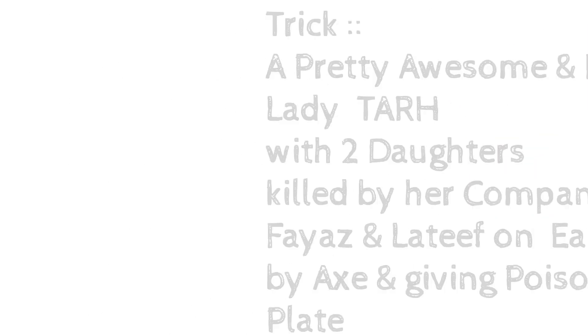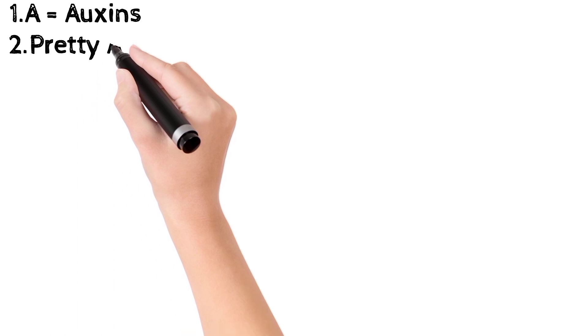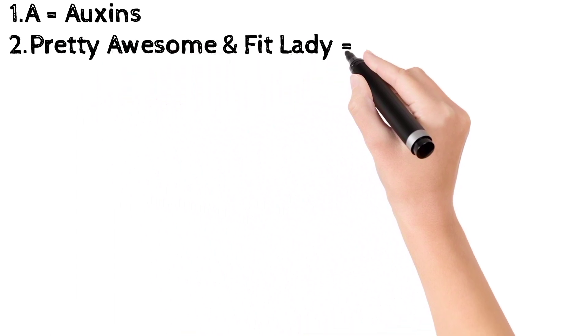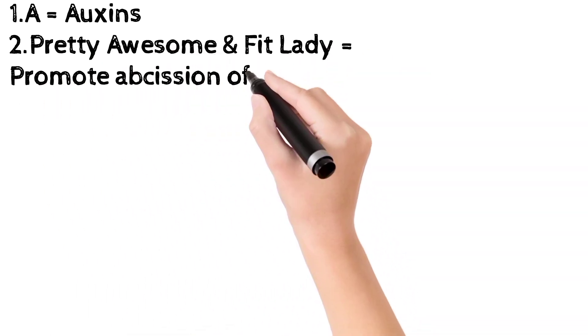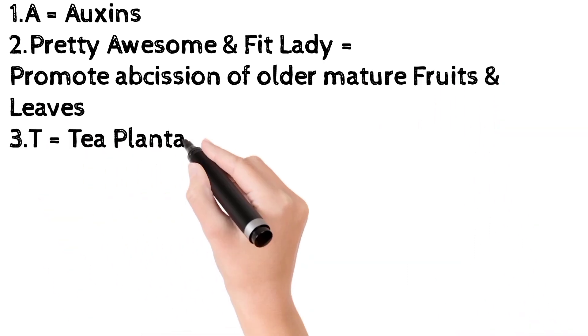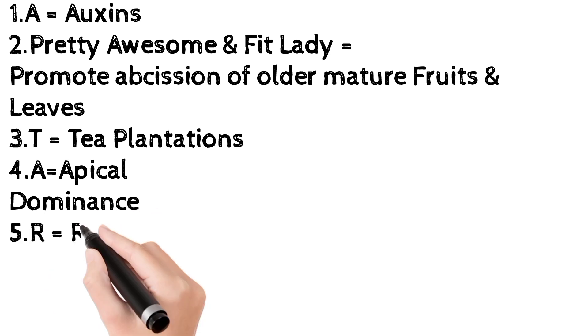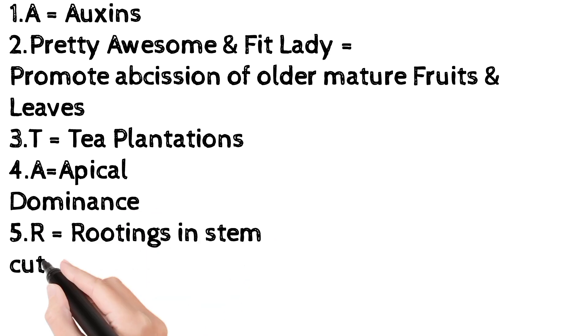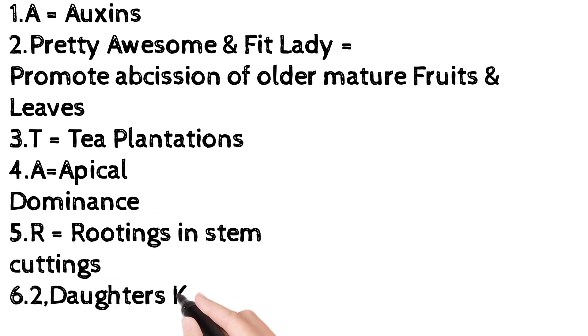Now in the trick, A denotes auxins. Obviously these are the functions of auxins. Pretty Awesome and Fit Lady denotes promote abscission of older mature fruits and leaves. T denotes tea plantations. A denotes apical dominance. R denotes rooting in stem cuttings.